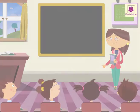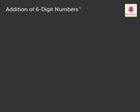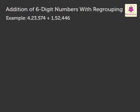Let us learn addition of 6- and 7-digit numbers with regrouping. We begin with addition of 6-digit numbers with regrouping. Let us add the 6-digit numbers 4,23,574 and 1,52,446.